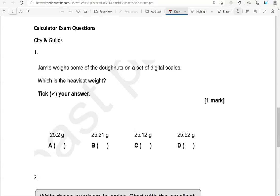From now on, we can use a calculator. Jamie weighs some of the doughnuts on a set of digital scales. Which is the heaviest weight? Tick your answer. 25.2 grams, 25.21 grams, 25.12 grams, 25.52 grams. So, the digits before the decimal point, the same 25, 25, 25. That means we've got to focus on the digits after the decimal point.